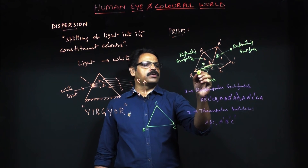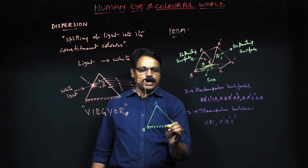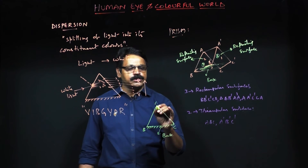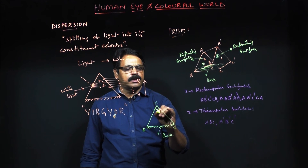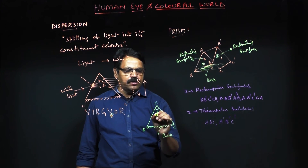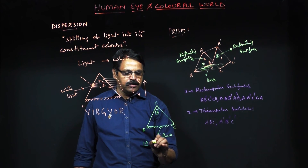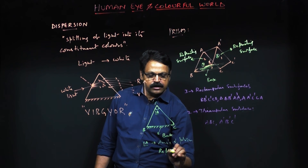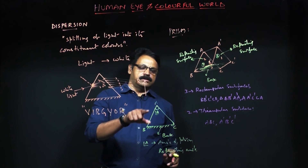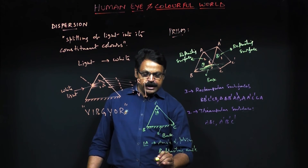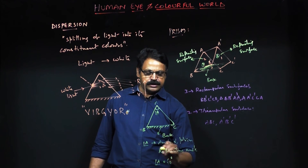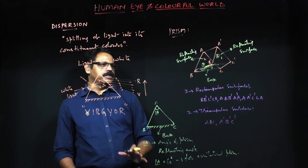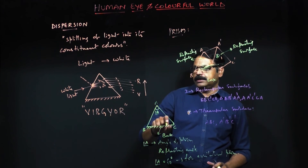BC is resting on the ground, which is why it is called the base. Opposite to the base, the angle at the apex is called the angle of prism, also known as the refracting angle. For an equilateral triangular prism, this angle A is generally 60 degrees.